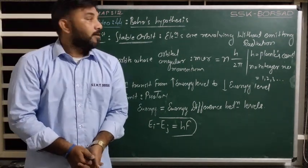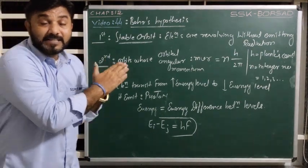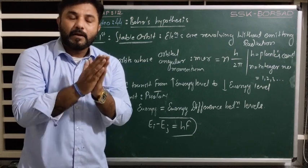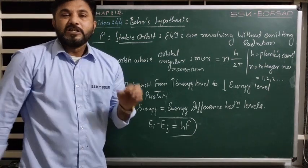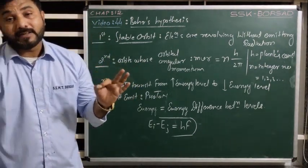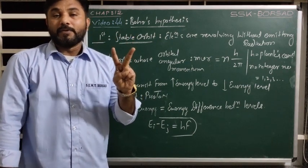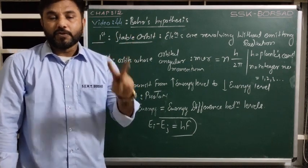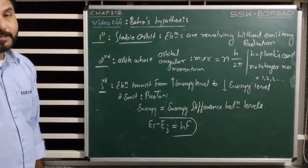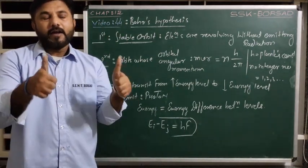So this is all about Bohr's hypotheses. To summarize: first hypothesis — stable orbits, electrons do not emit radiation; second — stable orbit whose orbital angular momentum mvr is an integral multiple of h upon 2π, where n is an integer 1, 2, 3 and h is Planck's constant; third — when electron transits from high energy level to low energy level, it emits a photon and E_i minus E_j equals hf.